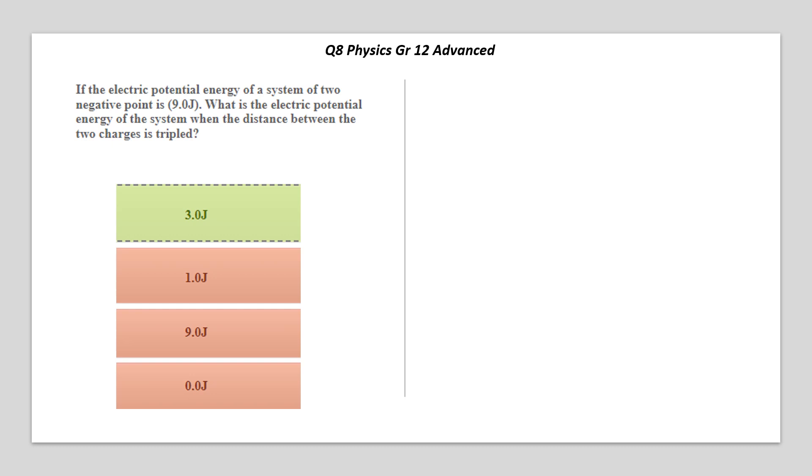So, grade 12 advanced question 8: If the electric potential energy of a system of two negative charges is 9 joules, what is the electric potential energy of the system when the distance between the two charges is tripled?